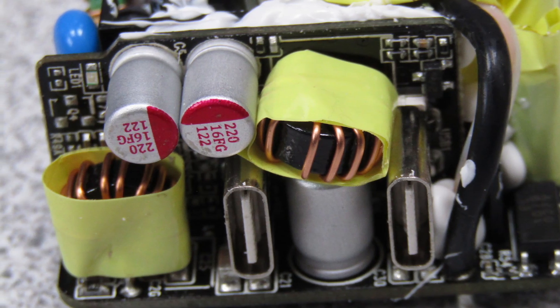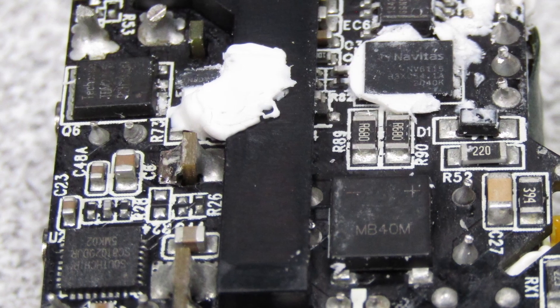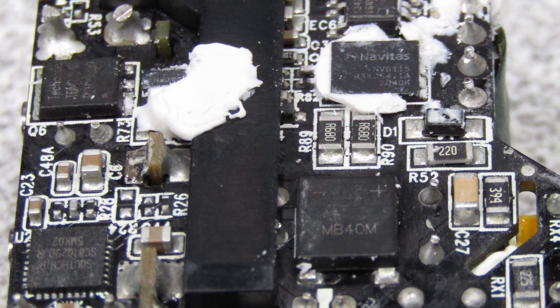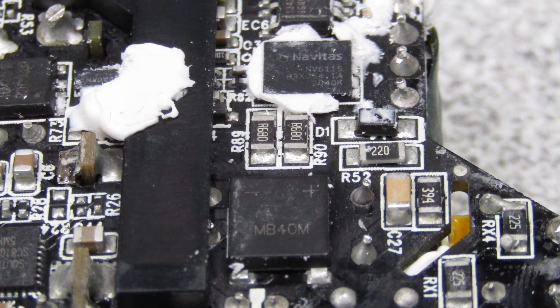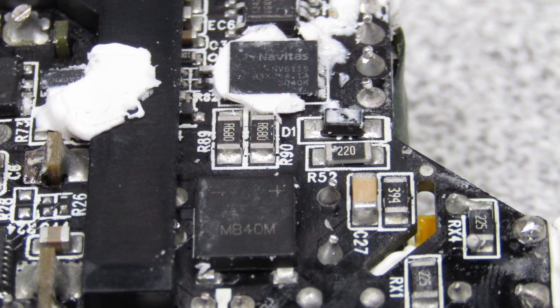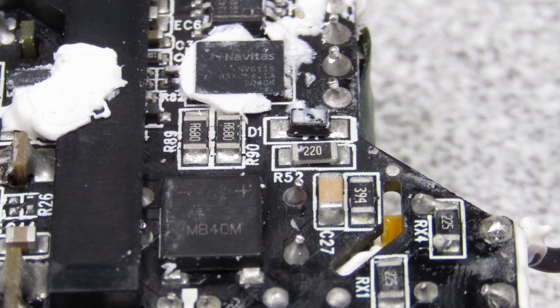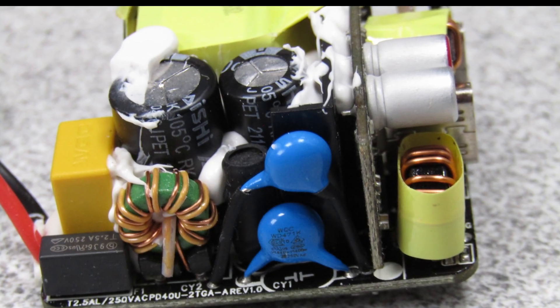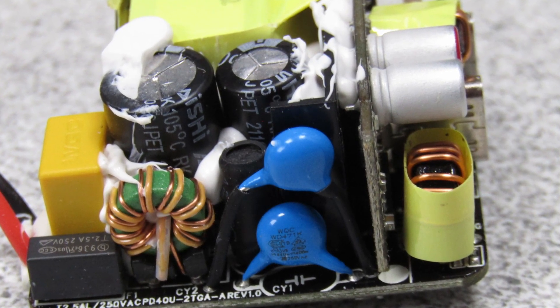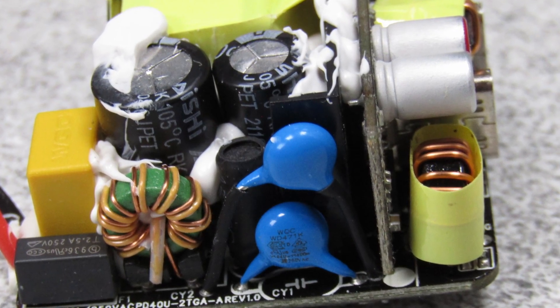Some thought went into this one and it shows in the construction. The device does in fact use the gallium nitride MOSFET as claimed on the packaging. The method of achieving dual USB outputs is novel and allows both ports to operate independently. The power performance isn't amazing, video link down below, but it is a reasonable step in the right direction. See you soon for more. Thanks again and bye.